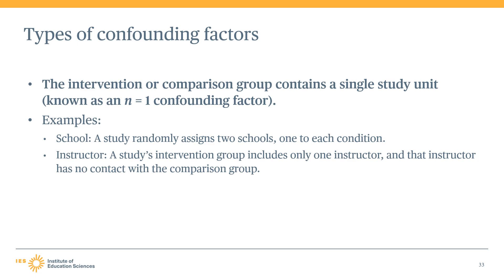For example, if a study randomly assigns two schools — one to each condition — this study would have an N equals one confounding factor because each condition only contains one unit. The study cannot distinguish the effect of the intervention from the effect of the one school where the intervention is implemented. This type of N equals one confounding factor can also occur with larger samples, such as when a single instructor provides the intervention to all students and has no contact with the comparison group, making it impossible to determine whether the observed effect is due to the intervention or to the instructor.